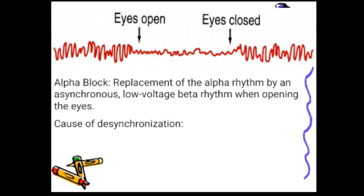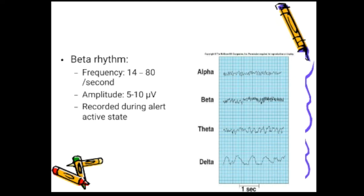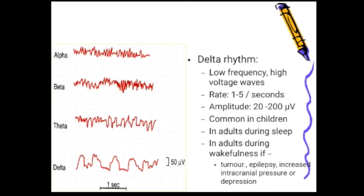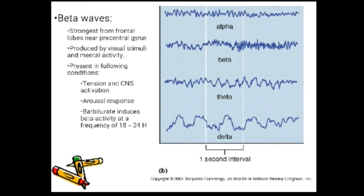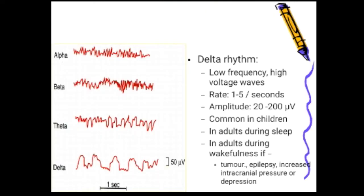The reason for alpha block: when eyes open, brain activity increases greatly and synchronization becomes so little that brain waves nullify one another, producing low-voltage irregular beta waves. Beta rhythm has a frequency of 14 to 80 Hz and amplitude of 5 to 10 microvolts, recorded during an active or alert state. Beta waves are strongest from the frontal lobe near the precentral gyrus, produced by visual stimuli and mental activation, and are present in tension, CNS activation, arousal response, and barbiturate use.